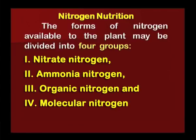The forms of nitrogen available to plants may be divided into four groups: nitrate nitrogen, ammonia nitrogen, organic nitrogen, and molecular nitrogen.